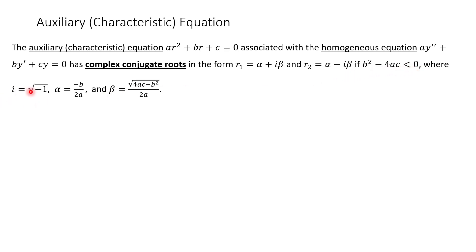Remember, i is the square root of negative 1 by definition. Some textbooks use j for this; we use i. Alpha is going to be the part before the plus-and-minus sign if you think of your quadratic formula — so negative b over 2a. Then beta is after the plus-and-minus sign. Notice here we have a negative b² and a positive 4ac because we factor out the square root of negative 1 and call that i. So alpha is the real part of your root and beta is the imaginary part, beta·i.